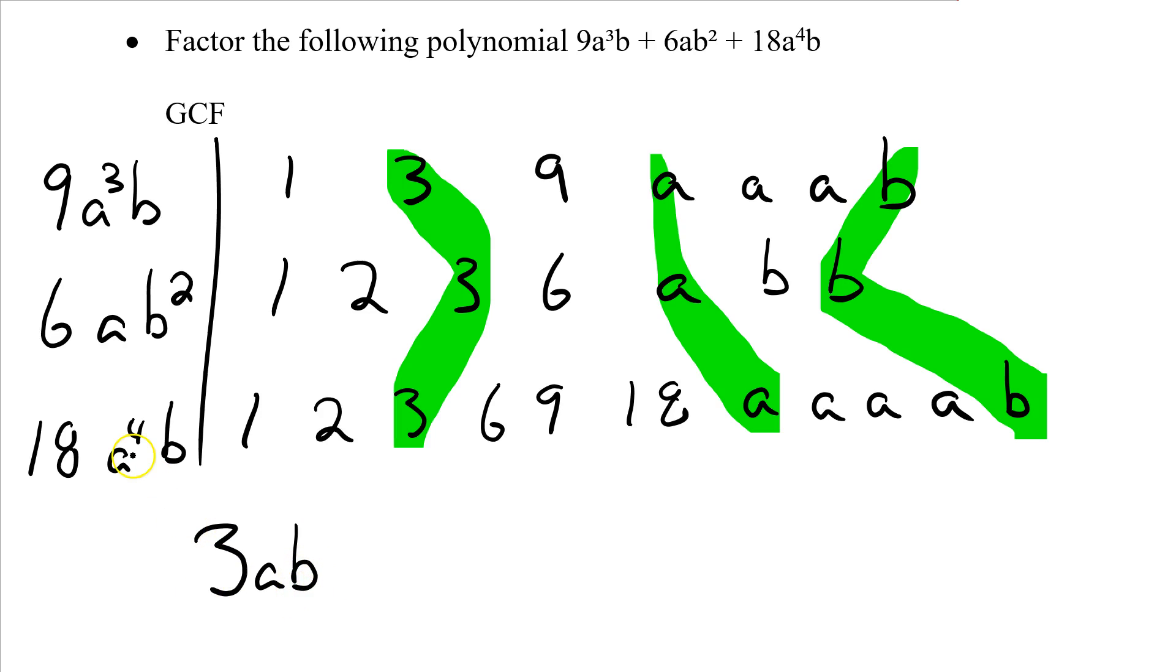Now I pull a 3ab out of each term. 9 divided by 3 is 3. a³ divided by a - remember when you're dividing exponents, you subtract them - 3 minus 1 is 2, so I get a². And b minus b, 1 minus 1 is 0, it disappears. Then 6 divided by 3 is 2. a divided by a, 1 divided by 1 disappears. b² divided by b, 2 minus 1 gives me b. And finally, 18 divided by 3 is 6. a⁴ divided by a is a³. And b¹ divided by b¹ is b⁰, which disappears.